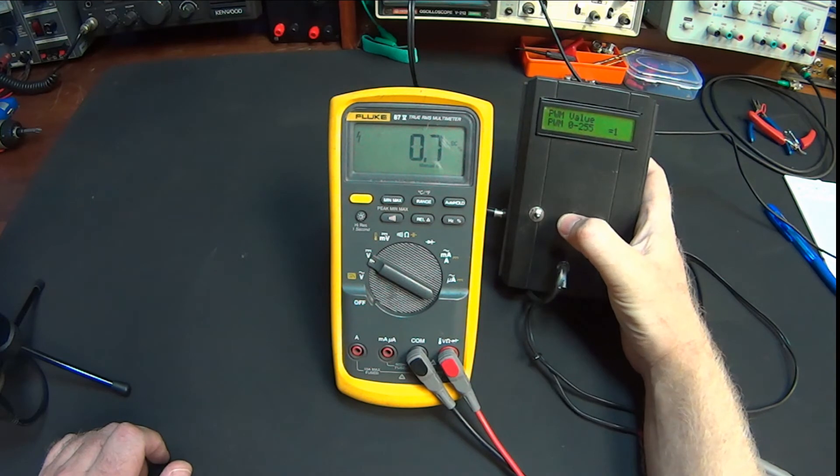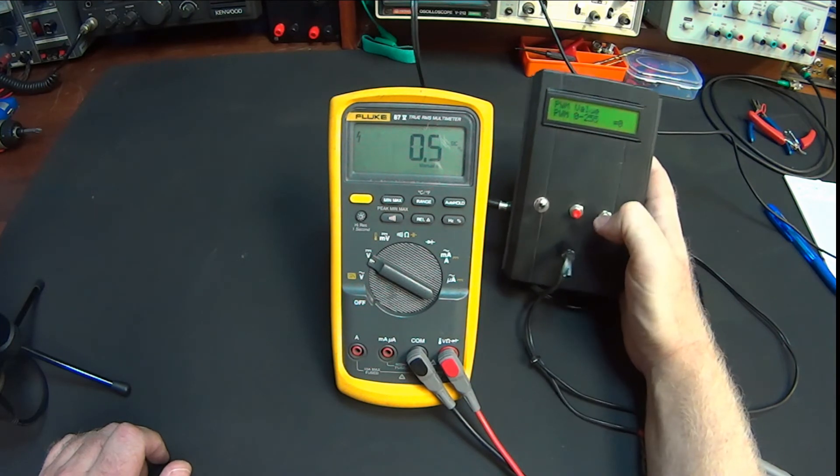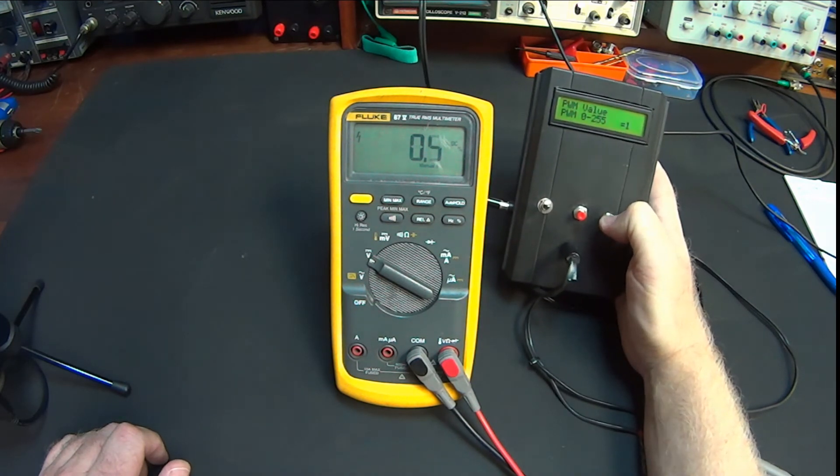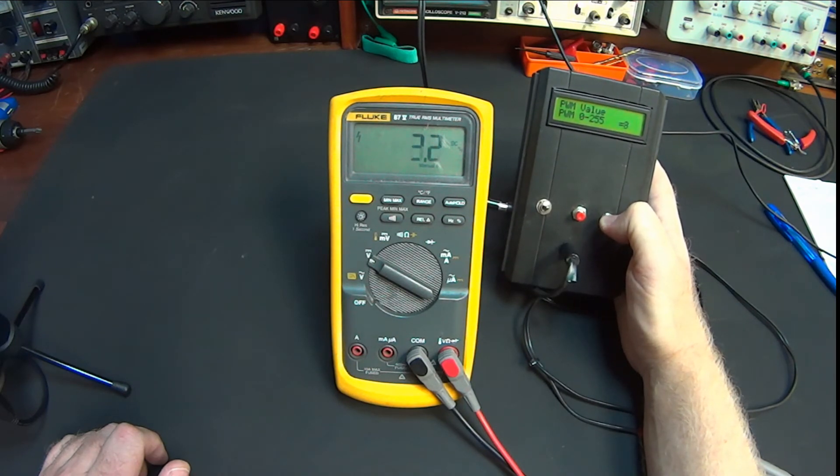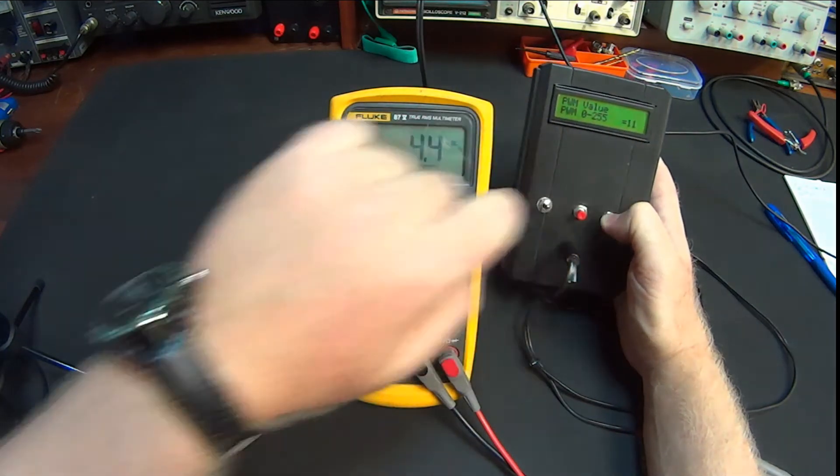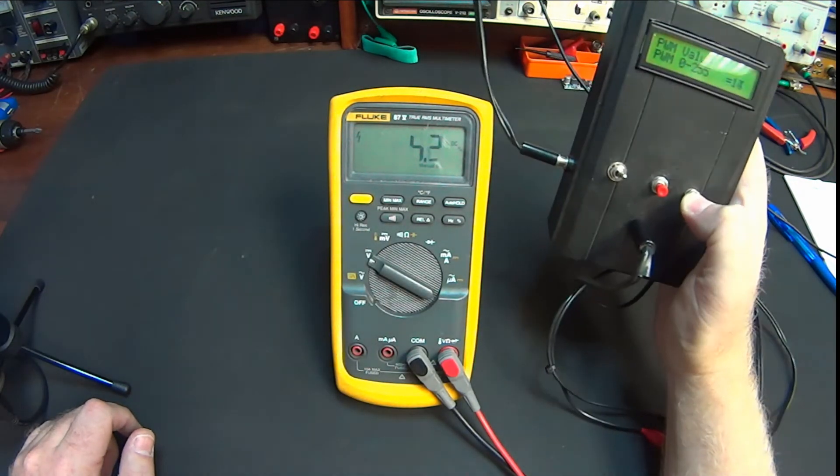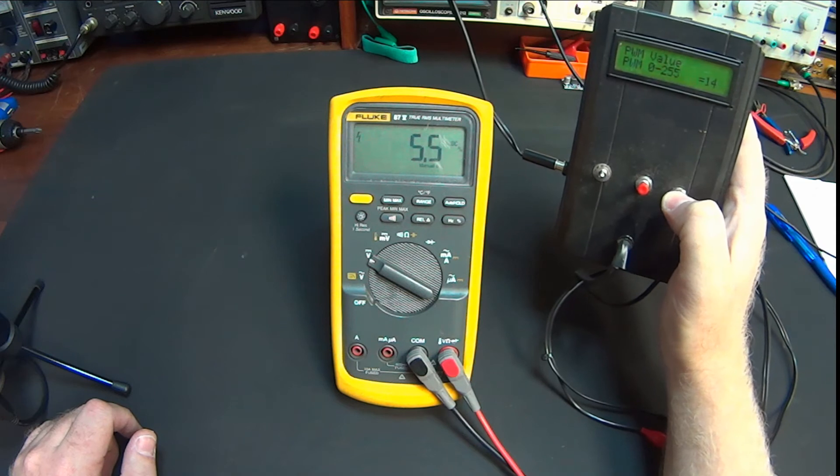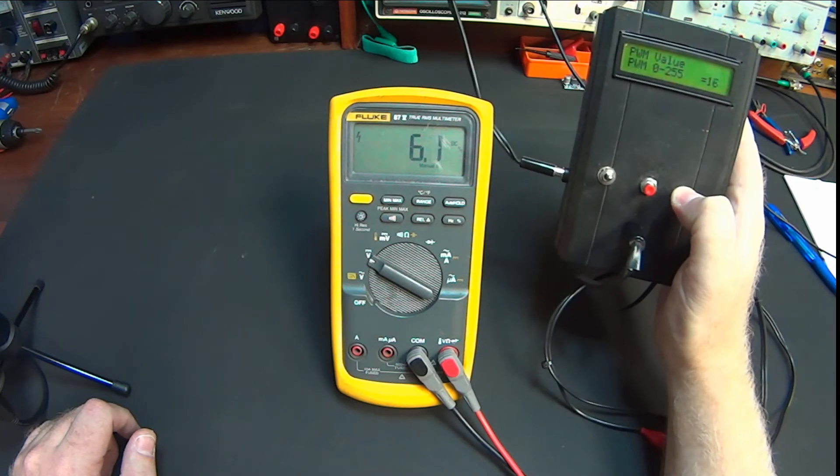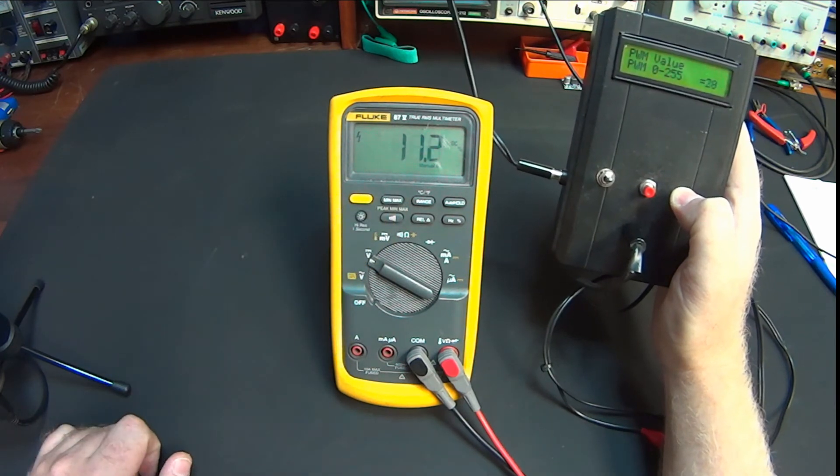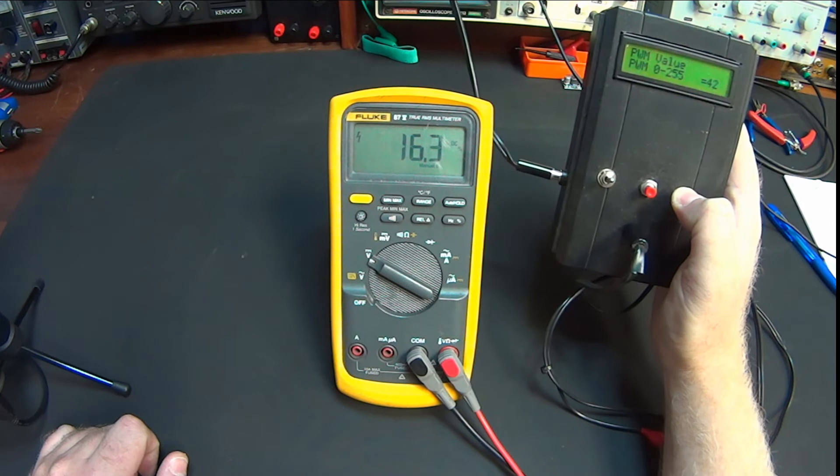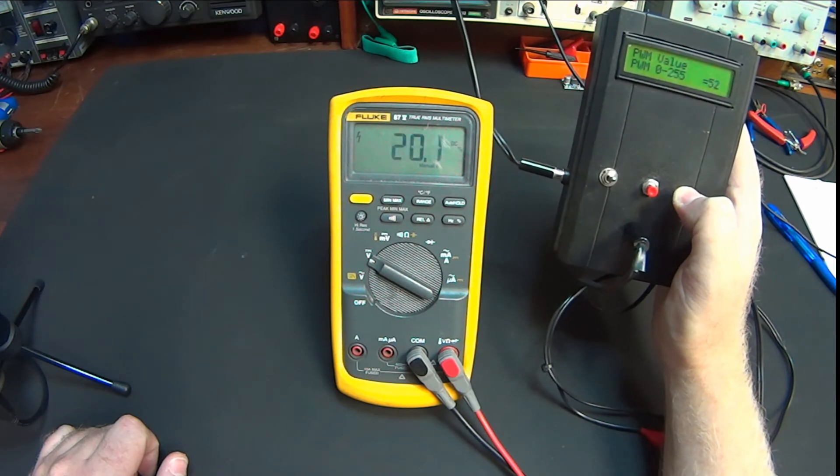As you can see, as we decrease the duty cycle to zero, now we go one, two, three, all the way up. And as we let that increase, you can see the increase in the numbers over here. And that's out of 255. We can see we're going up, and you can see your duty cycle going up, so 255, 256 technically.